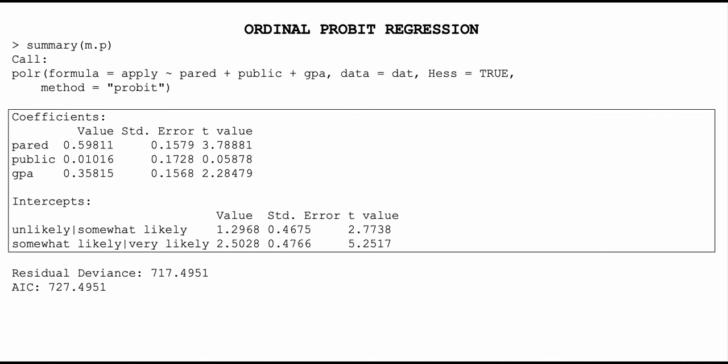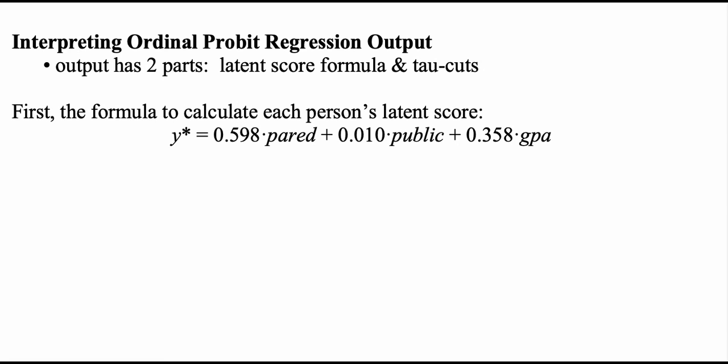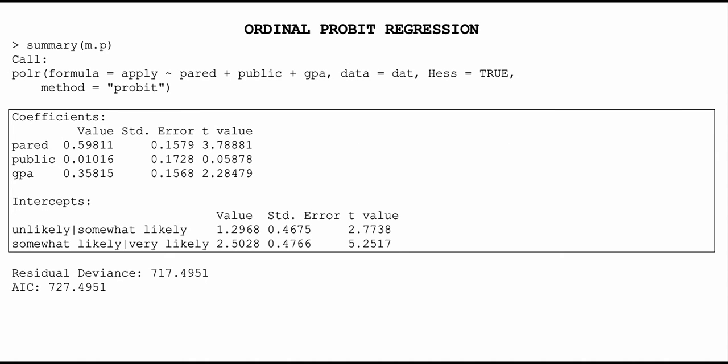Here is the ordinal probit regression output from R using three predictor variables to predict the ordinal dependent variable. The output has two parts: the coefficients and the intercepts. The first part gives the formula to calculate each person's latent score y*, and the second part gives the position of the tau cuts — the values against which y* is compared to determine which category each person falls into.